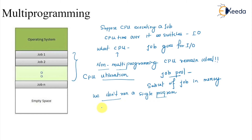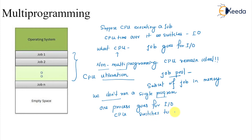So as soon as one process or one job goes for input/output, the CPU switches to another job with multi-programming. Rather than running a single program, we are running multiple programs. That concept is basically called multi-programming.